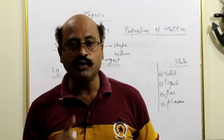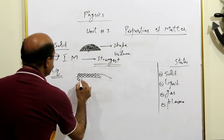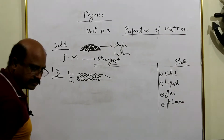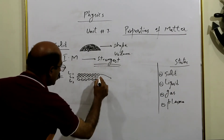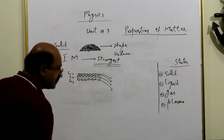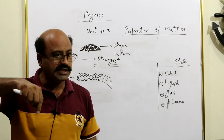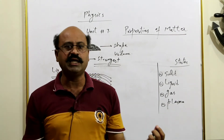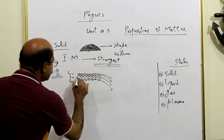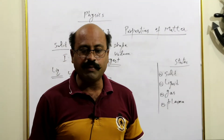Jo liquids ka flow hai woh depend karta hai un ki viscosity pe. Farz karein mere paas ek liquid hai jis ki teen layers hain — layer number one, layer number two, layer number three. Jab is ko neeche giraon ga, pehle yeh layer slip ho ke neeche jayegi, phir doosri, phir teesri. Neeche wali layer pe sabse zyada pressure hota hai woh bilkul last mein flow karna shuru karti hai. Jab hum paani ka drop giraate hain kisi jagah pe, toh woh upar se side pe phailta hai.